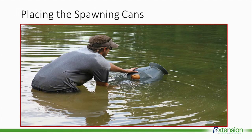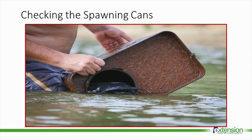Catfish like to spawn in sheltered locations, so many farmers will put out spawning cans in two to four feet of water. The male catfish will find and prepare the can for spawning and try to attract a female. After several days, the farmers will check the spawning cans by slowly raising them out of the water. They will often find the male fish still in the can, caring for the eggs.